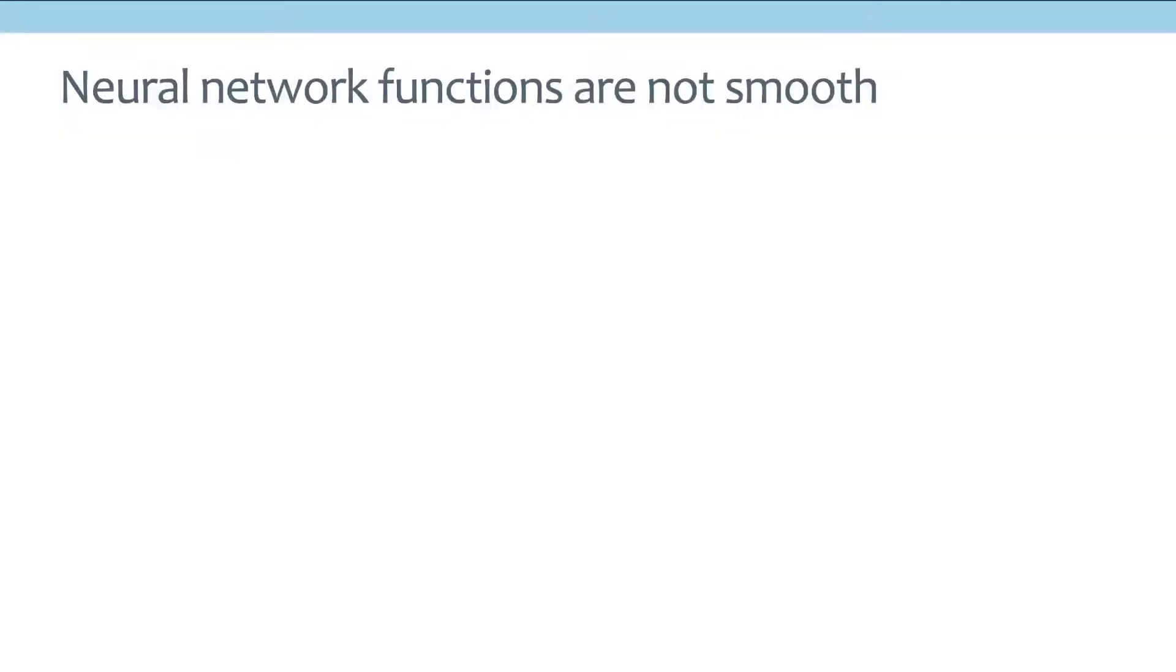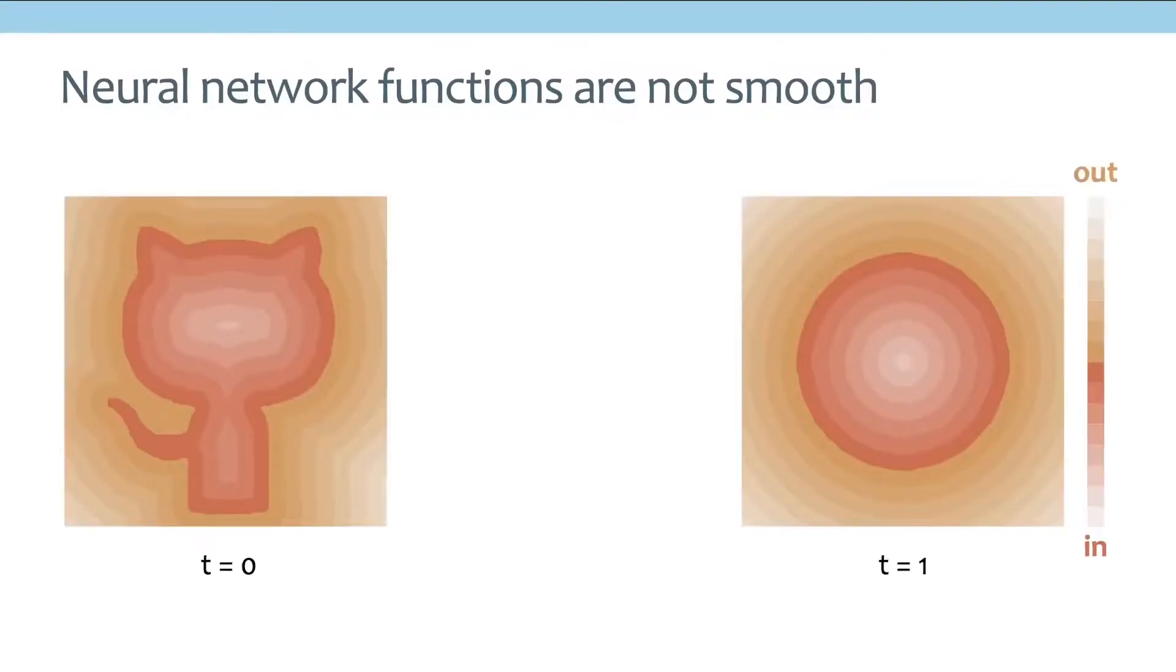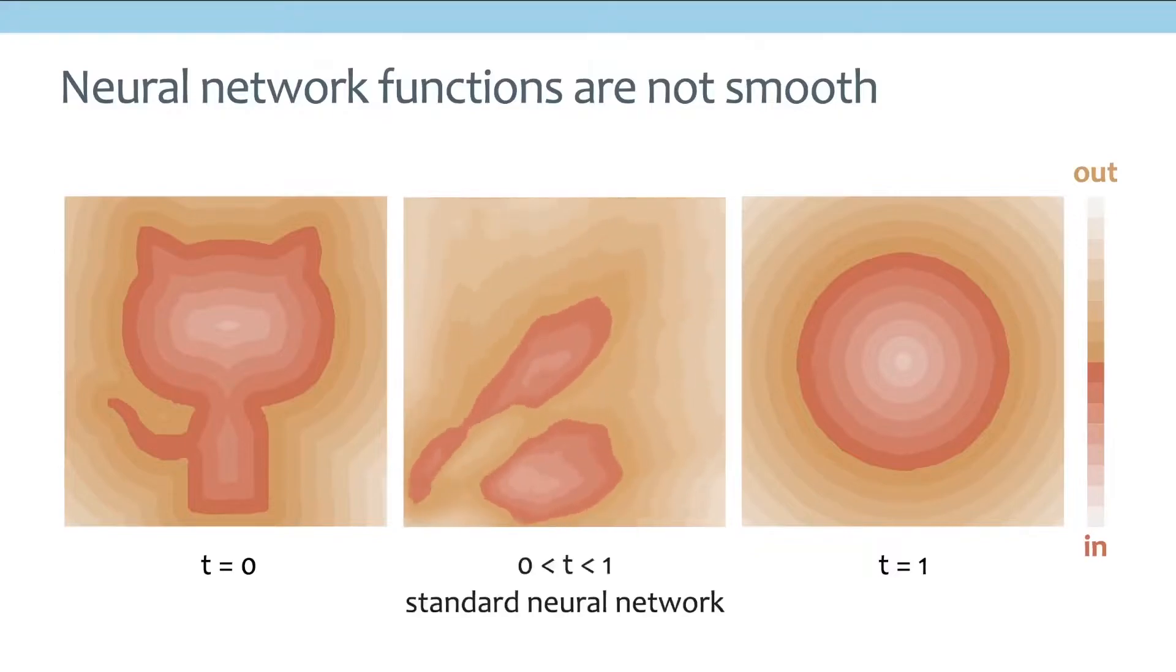In this work, we tackle the problem that neural network functions are not very smooth. For example, if I want the network to output a function of a cat when t equals zero, and a function of a circle when t equals one, following standard training procedure, this is a neural network you may obtain. And you can see that if you interpolate between zero and one, the resulting function is not very smooth.